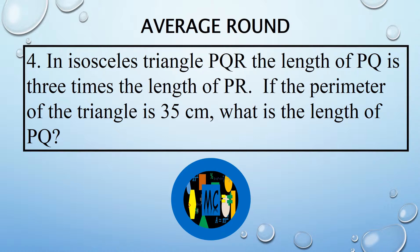In isosceles Triangle PQR, the length of PQ is 3 times the length of QR. If the perimeter of the triangle is 35 centimeters, what is the length of PQ?